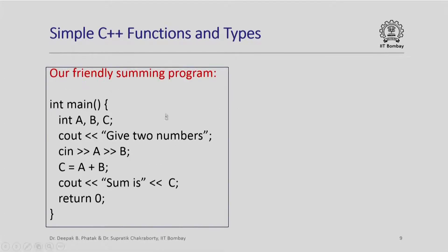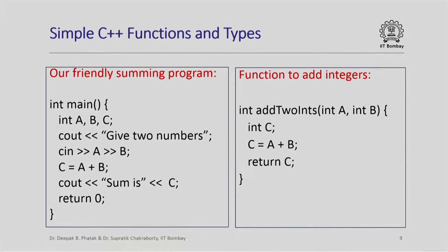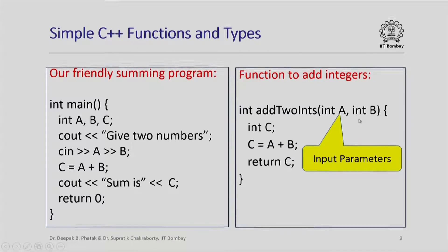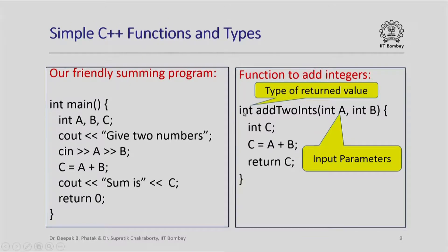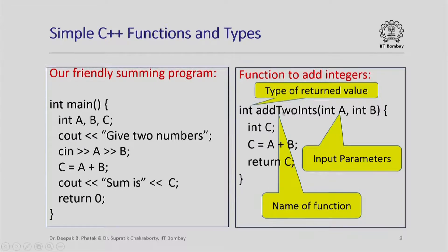Here is a friendly summing program from an earlier lecture that reads in two numbers and outputs their sum. I could also write a function 'add_two_ints' which takes two parameters called a and b, computes their sum and returns that value. Here a and b are input parameters with names and types. The function itself is associated with a return type — here integer — and the function also has a name just like a variable has a name. The same naming rules apply for naming functions as for variables.